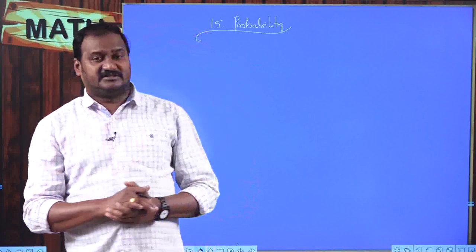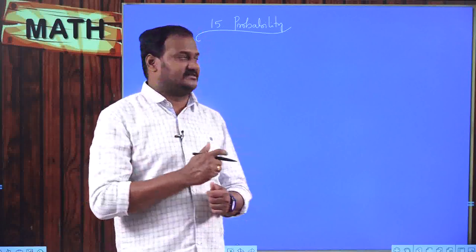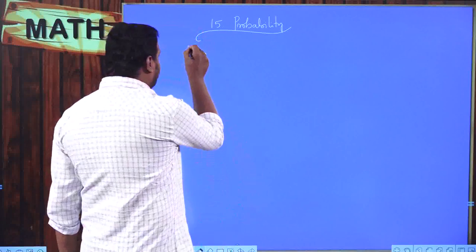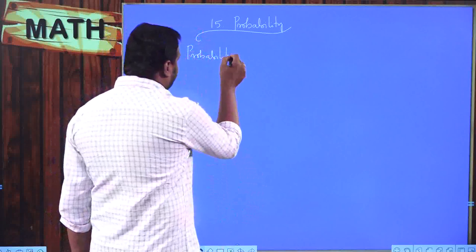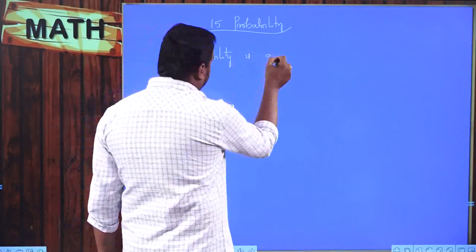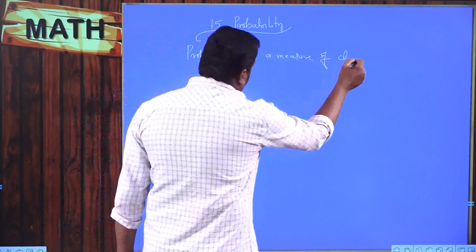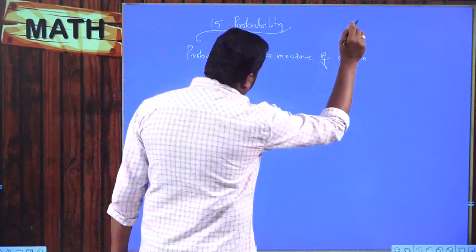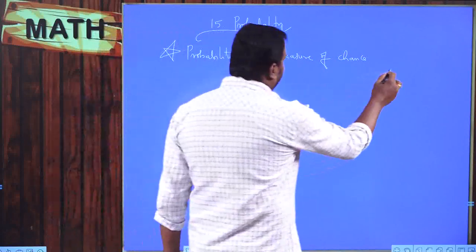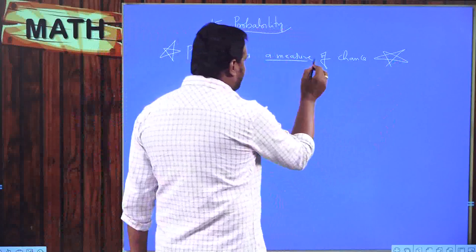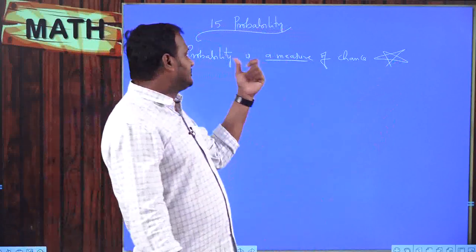So how do we define the word probability? Probability is a measure of chance. This is the definition of probability — we need to measure our chances, and that measurement of chance is probability.